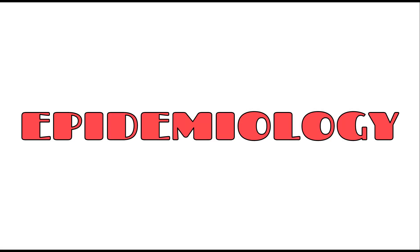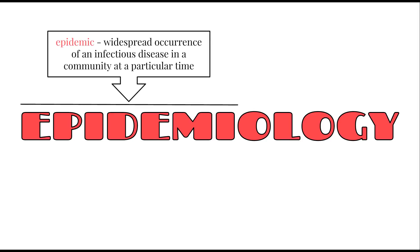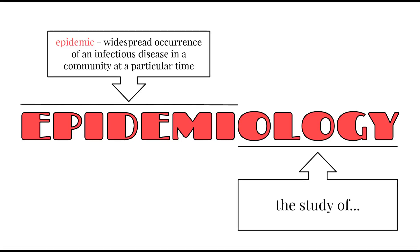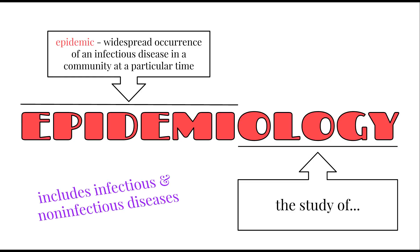Let's start off by breaking down the word epidemiology and working out what it means. We can break it down into two parts. The first part — 'epidemi' or 'epidemic' — refers to the widespread occurrence of an infectious disease in a community at a particular time. And then, just like all the other '-ologies' we've looked at since Year 7 Science, it refers to the study of.